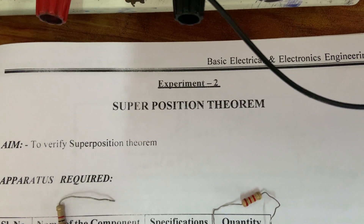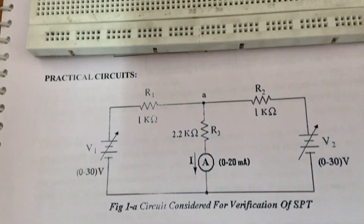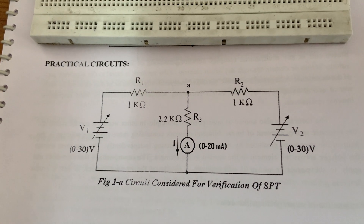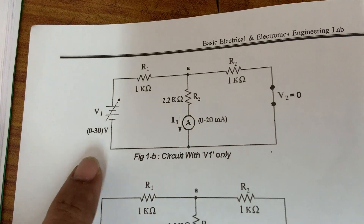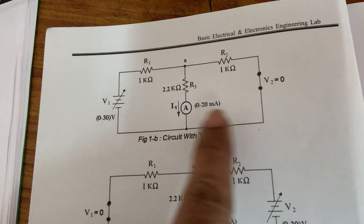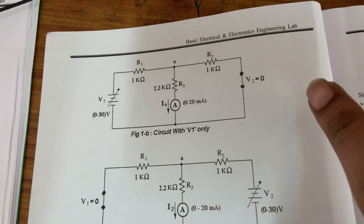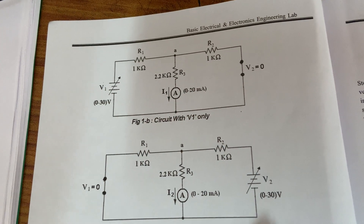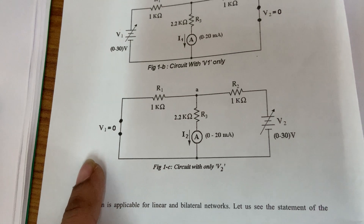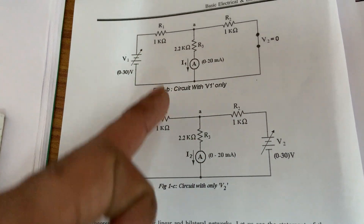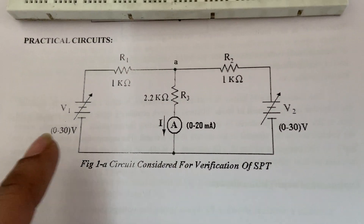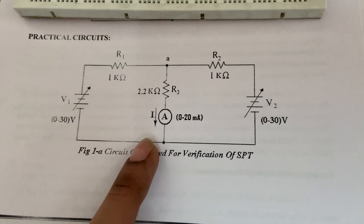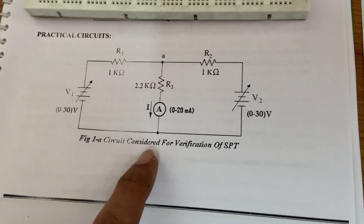Today we are going to discuss the superposition theorem. The circuit diagram shown is for verification of the superposition theorem. The total response is equal to the sum of the individual responses whenever sources are acting alone. If only one source is acting, the remaining source is deactivated by short circuit. V1 is activated while V2 is short circuited, and vice versa. The sum of these two responses, I1 plus I2, equals the total current I when two sources are acting.